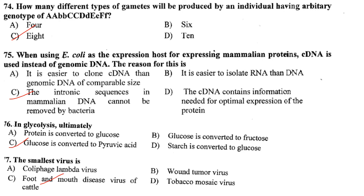When using E. coli as the expression host for mammalian proteins, cDNA is used instead of genomic DNA because the intronic sequences in mammalian DNA cannot be removed by bacteria. Since mammalian genes contain introns that must be removed to produce the correct protein sequence, cDNA — which lacks introns — is used for expression in E. coli.